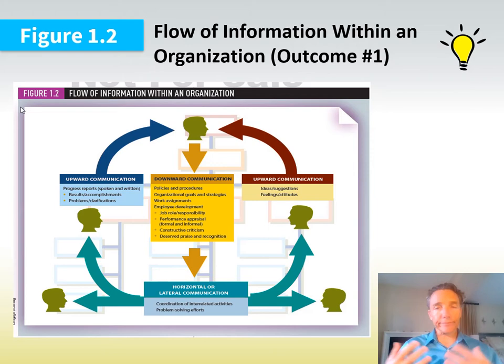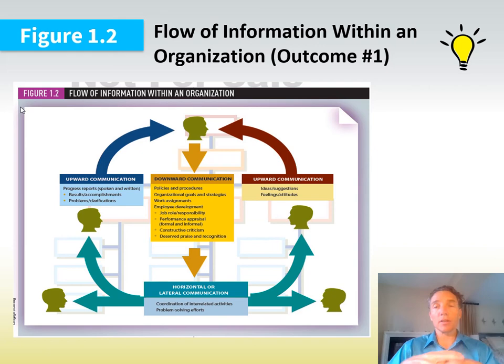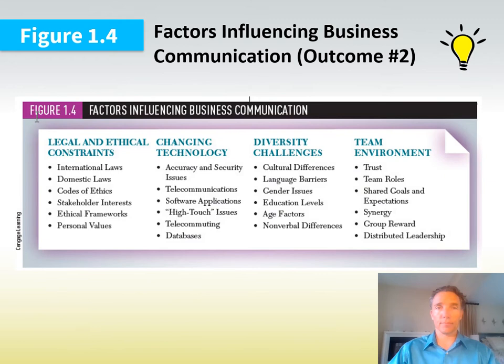Information flow: communication goes in all different directions in an organization — up the food chain, down the food chain, laterally. It appears within meetings, inside and outside the company. All of this happens and you can see some of the different stakeholders that are involved at each of the different steps.